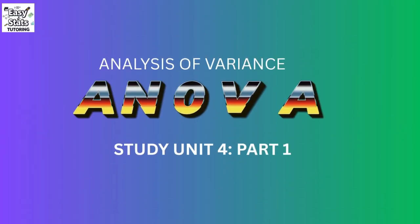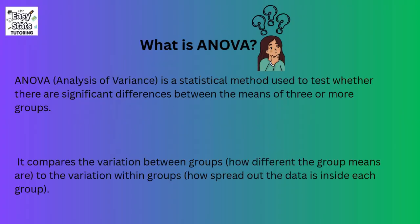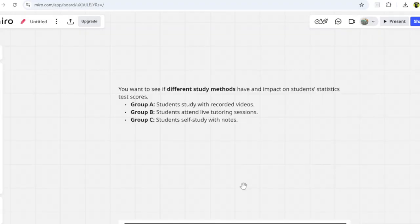In today's video we'll be doing Analysis of Variance — this is Study Unit 4, Part 1. Analysis of Variance is basically comparing the population mean of more than two populations. In previous work we covered one and two populations, so now in ANOVA we're doing more than two populations, comparing the mean within groups and the mean amongst groups.